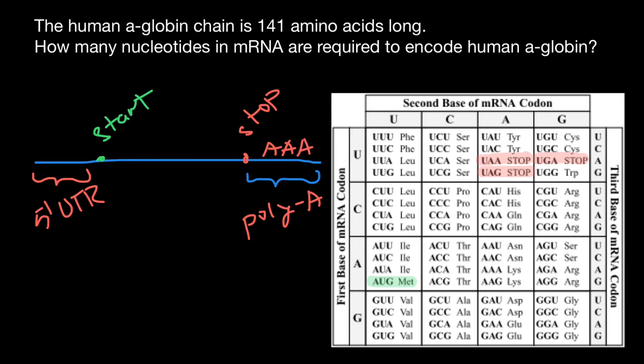How many nucleotides in messenger RNA are required to encode human alpha-globin? We have to say that 141 amino acids, we multiply by 3. This is going to be 423 plus 3 nucleotides.